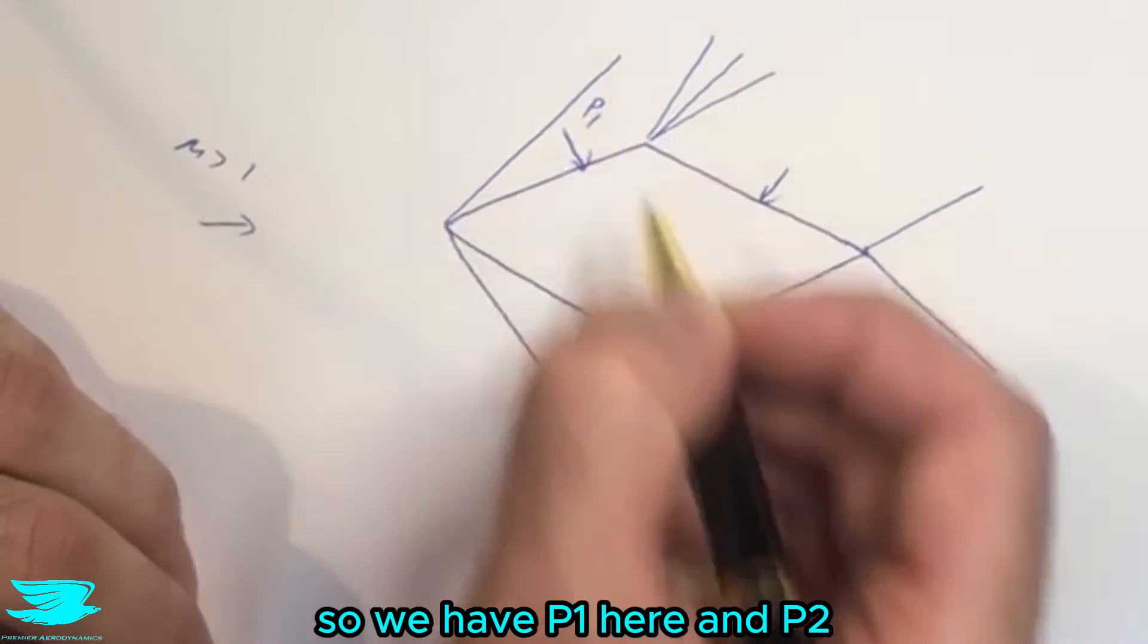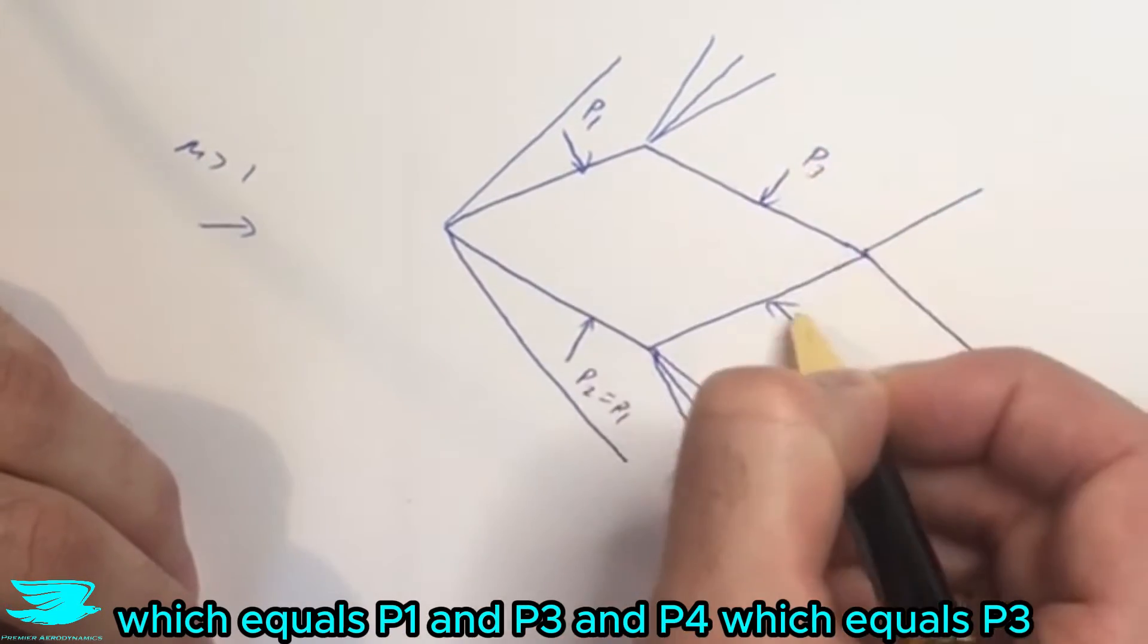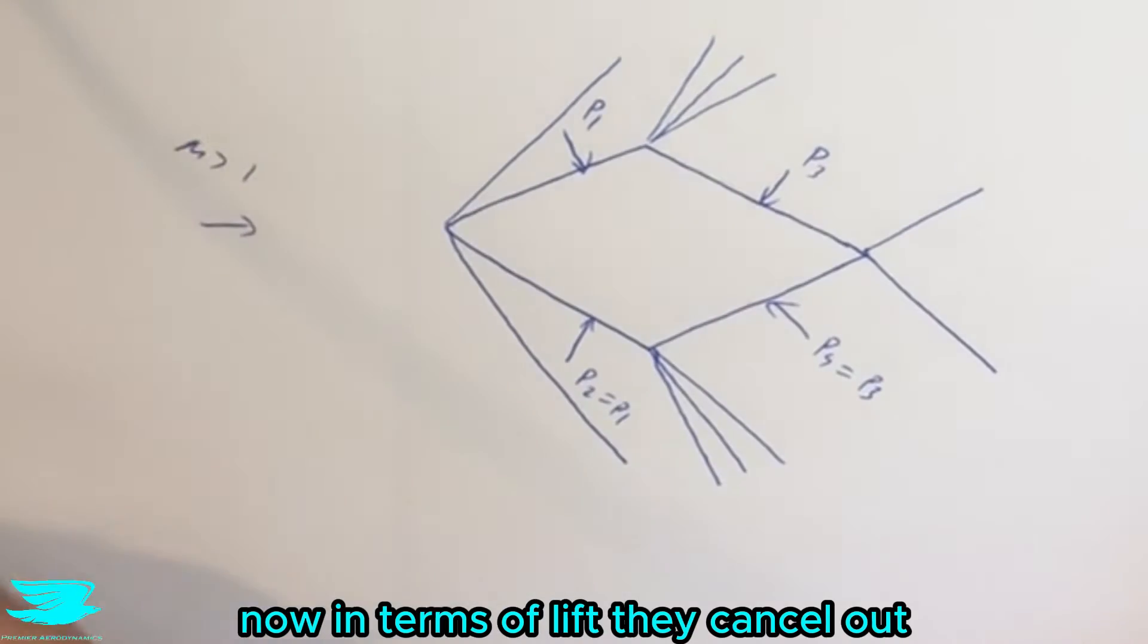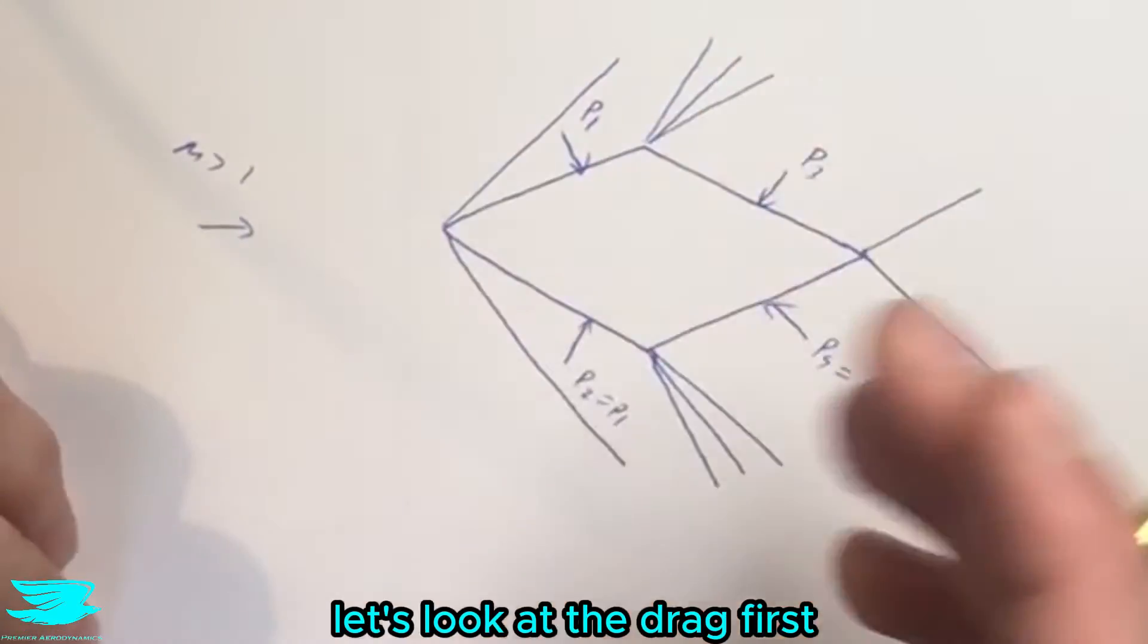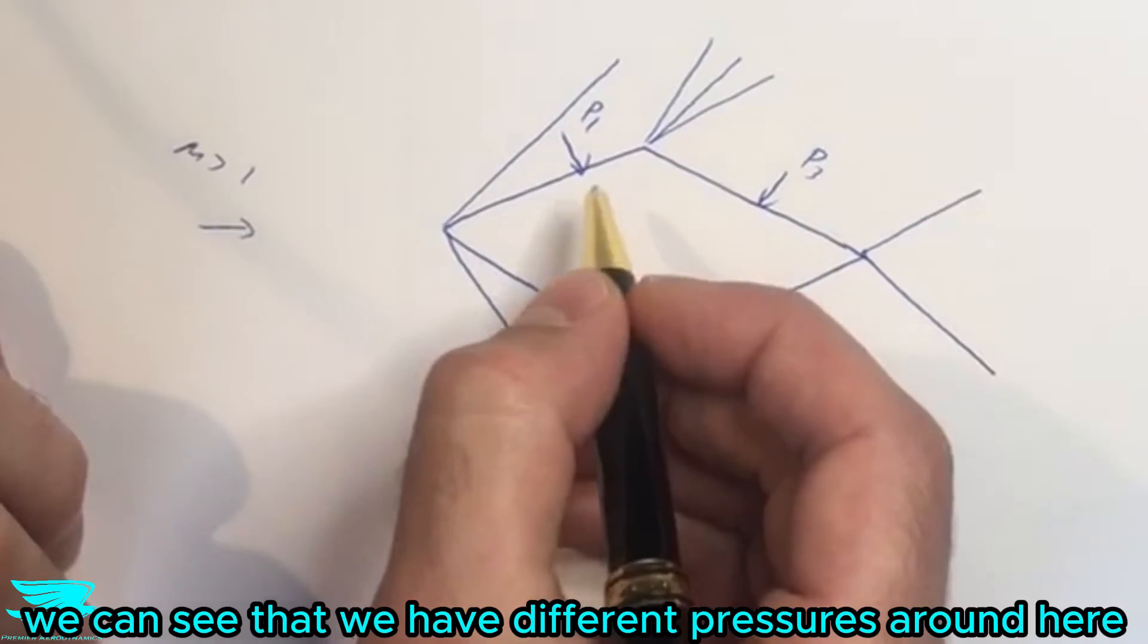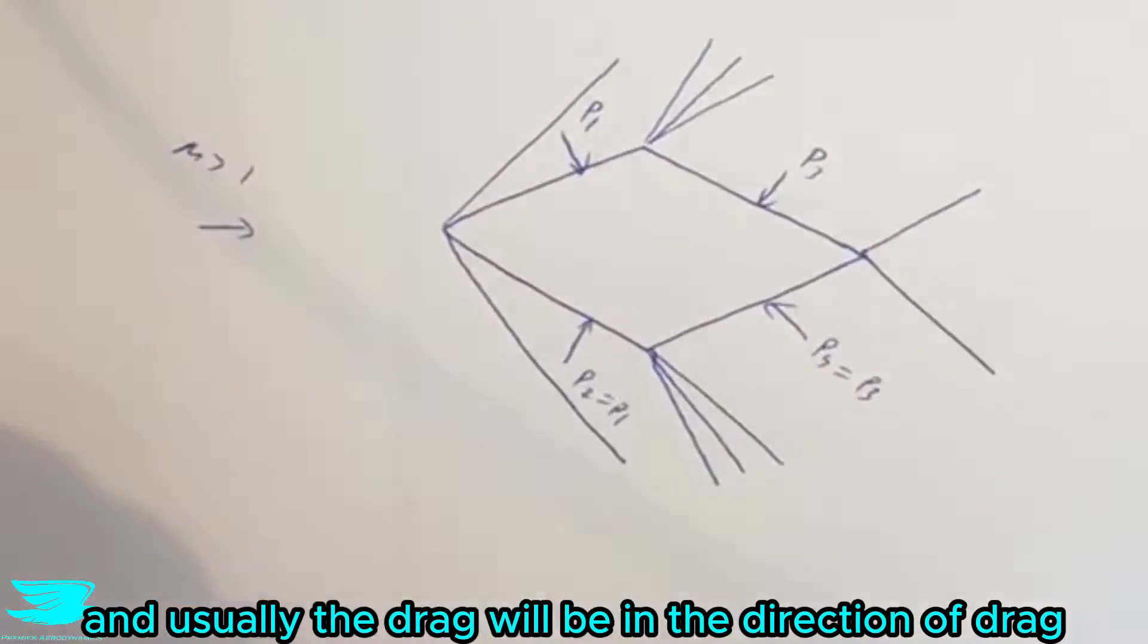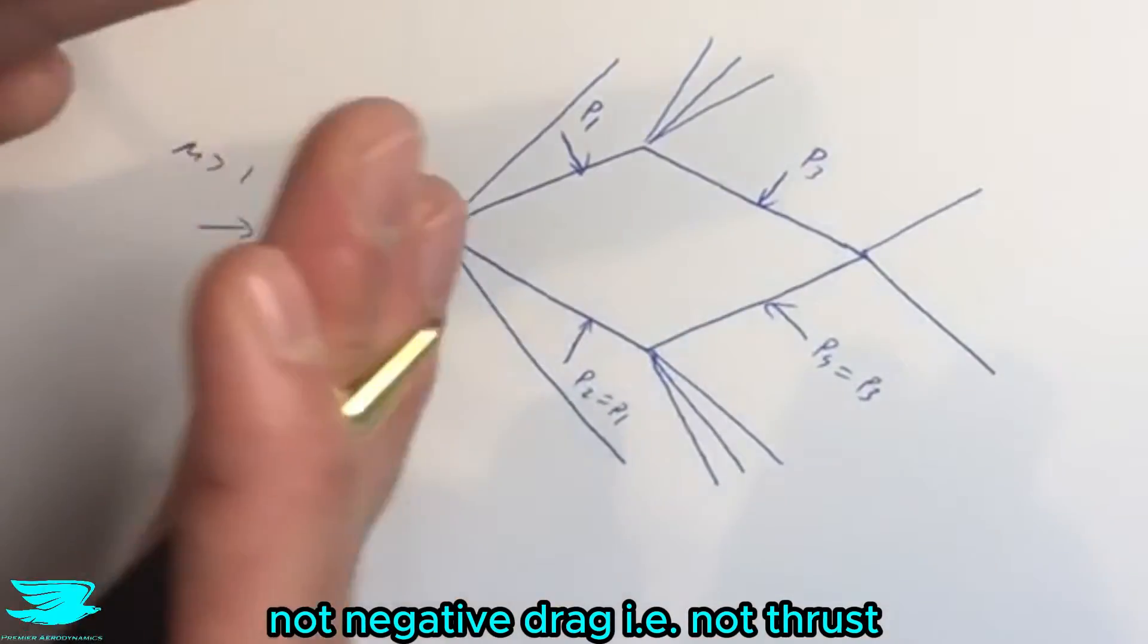So we have P1 here, and P2 which equals P1, and P3, and P4 which equals P3. Now in terms of lift, they cancel out, but we can still go through and calculate if they didn't cancel out. Let's look at the drag first, because usually it won't cancel out, we can see that we have different pressures around here. And usually the drag will be in the direction of drag. So it'll be positive drag, not negative drag, i.e. not thrust, but regular drag.